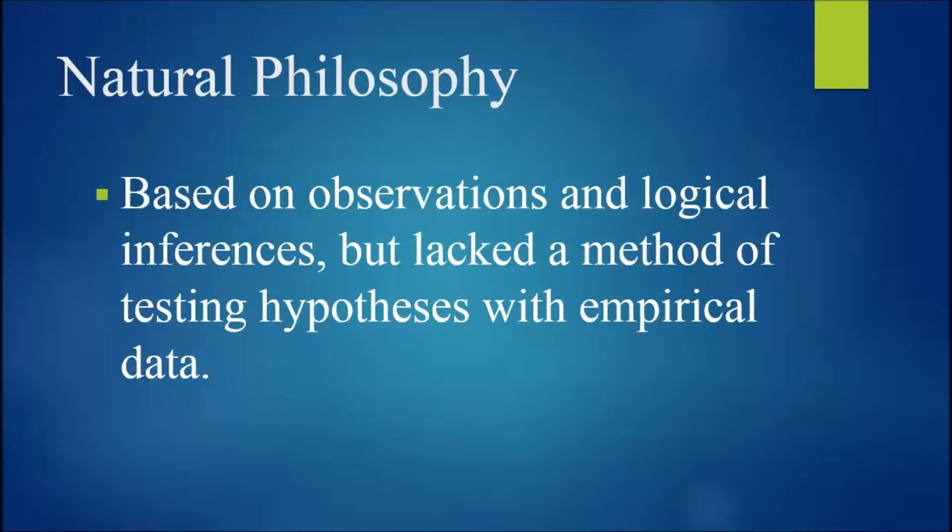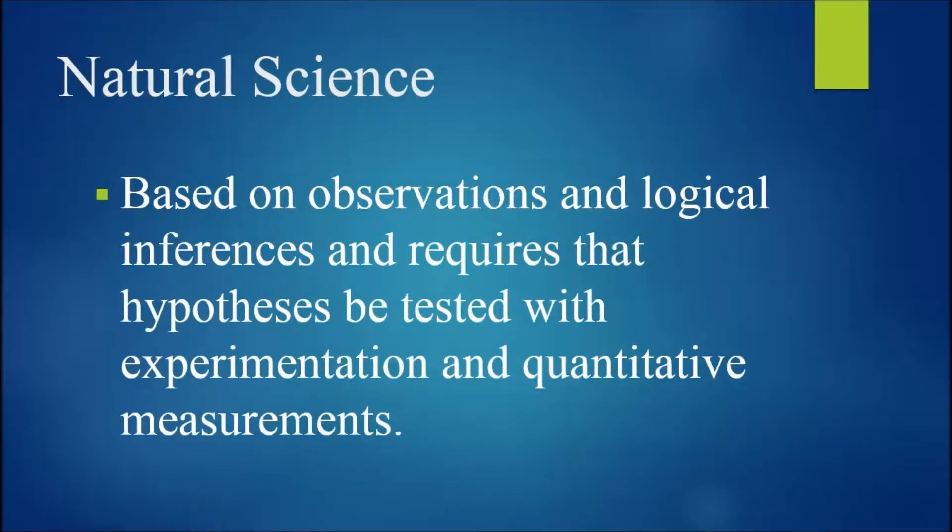Natural philosophy was based on observations and logical inferences, but lacked a method of testing hypotheses with empirical data. Natural science, on the other hand, is based on observations and logical inferences and requires that hypotheses be tested with experimentation and quantitative measurements. So what is it that we measure in physics?